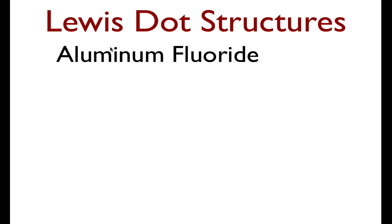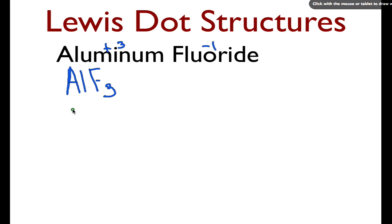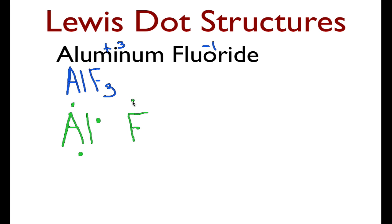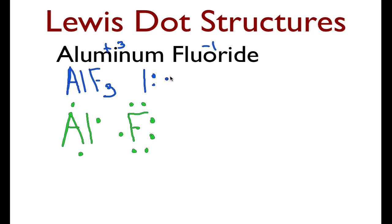Let's draw another one — this is aluminum fluoride. Aluminum is plus three, fluorine is minus one, and therefore the chemical formula for aluminum fluoride is AlF3. Drawing the Lewis structure for the individual atoms first: aluminum has three valence shell electrons, and fluorine has seven. Fluorine wants to gain one electron, but aluminum has three to give up, so we're going to need three fluorines. Each fluorine will take one of these valence electrons from aluminum and then have a full outer shell, giving a ratio of aluminum to fluorine of one to three.